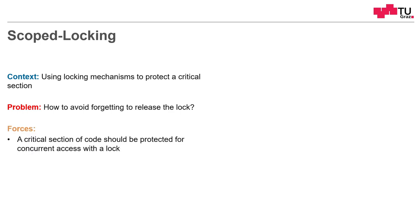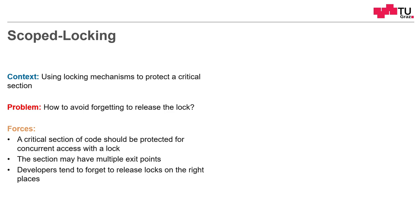The forces are: we want to protect the critical section with a lock; it could be that the section has multiple exit points — multiple returns. The problem is that developers tend to forget to release the locks at the right places, because they have to release the lock at all exit points. In exceptional error cases, it's not easy to see which locks are currently held and which are free.